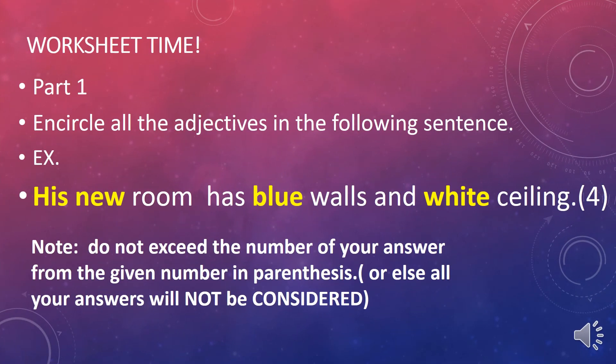It's worksheet time! For part one of your worksheet, circle all the adjectives in the following sentences. For example: His new room has blue walls and white ceiling — there are four adjectives indicated. Do not exceed the number of answers from the given number in parentheses, or all your answers will not be considered. If the number at the end of the sentence is four, encircle only four. If you encircle five, all your answers will be marked wrong. So please be careful.